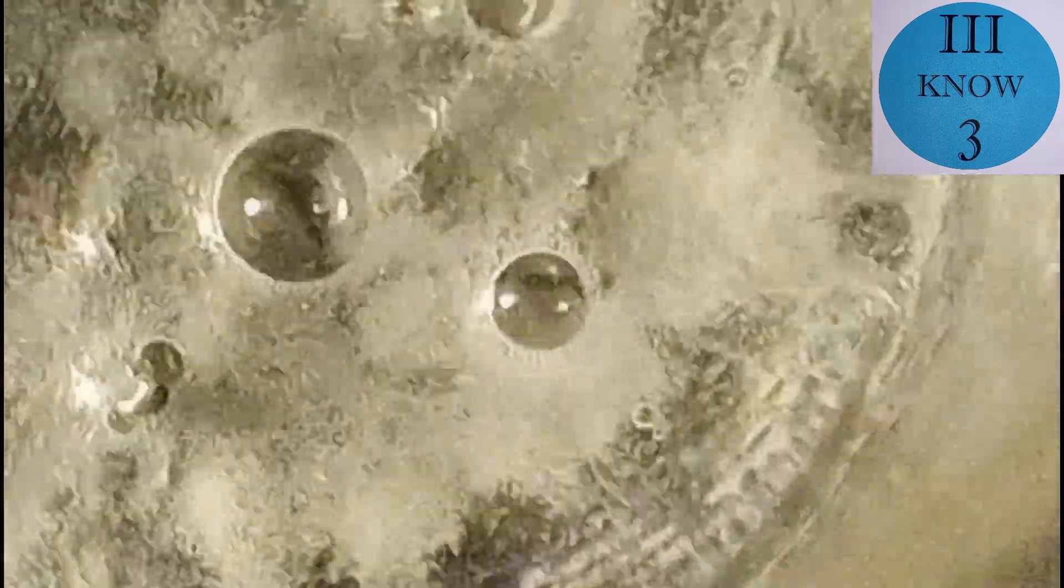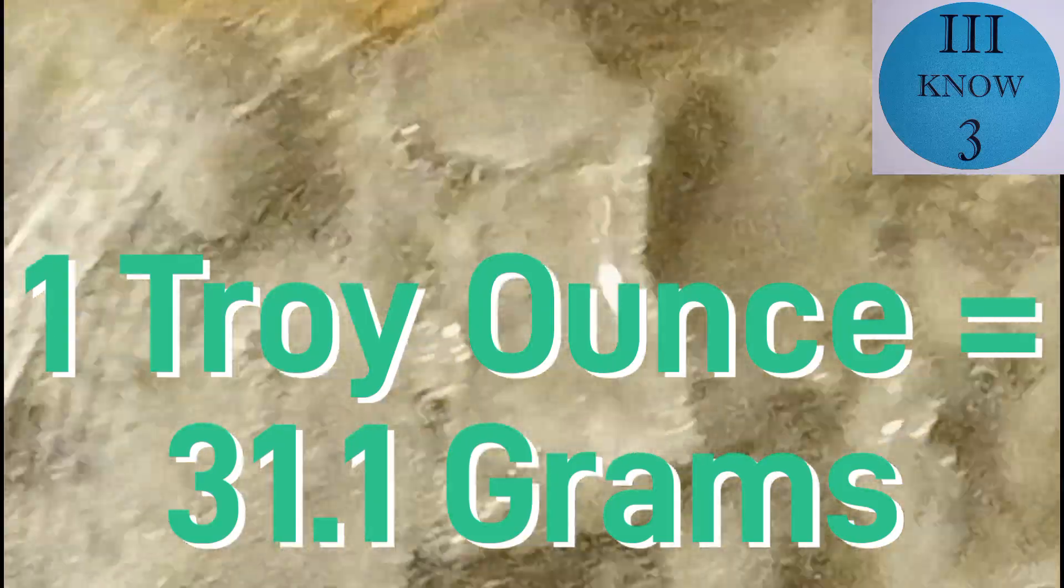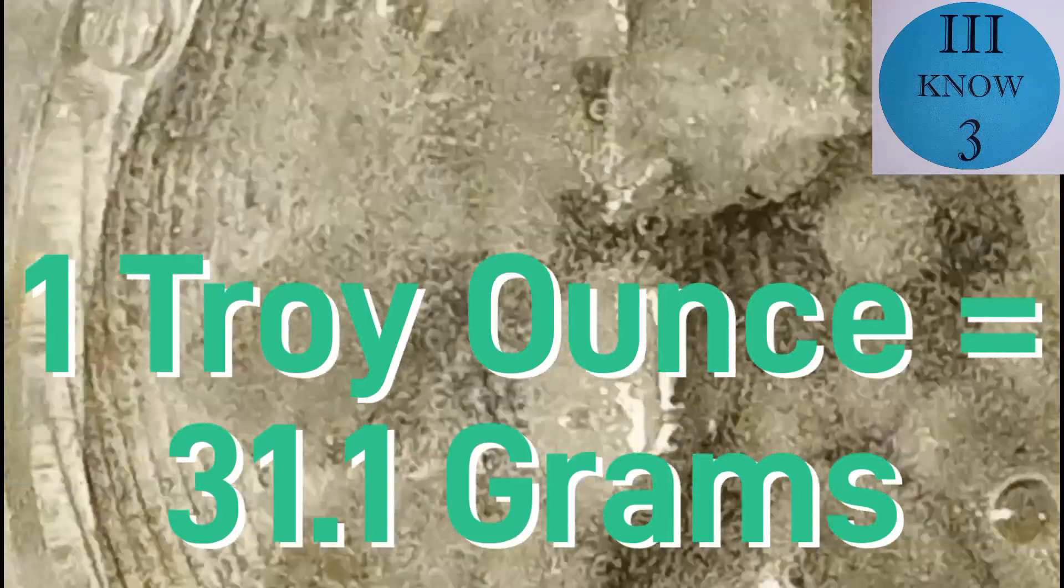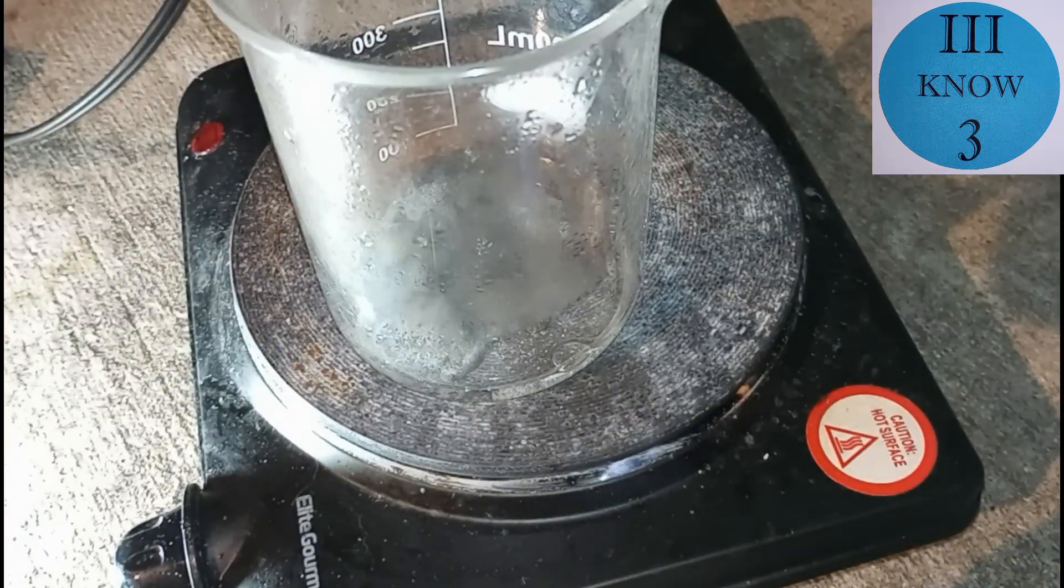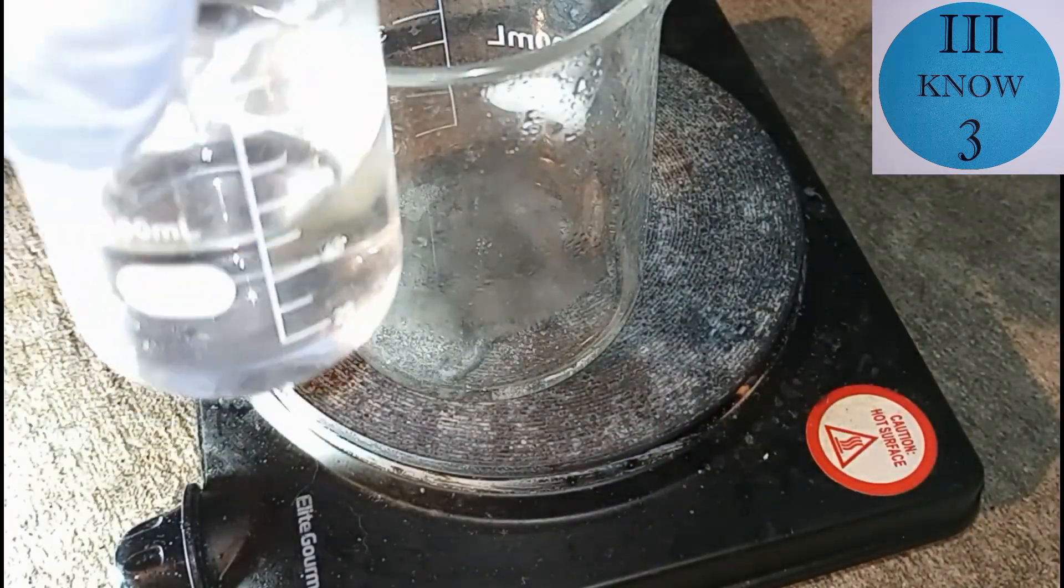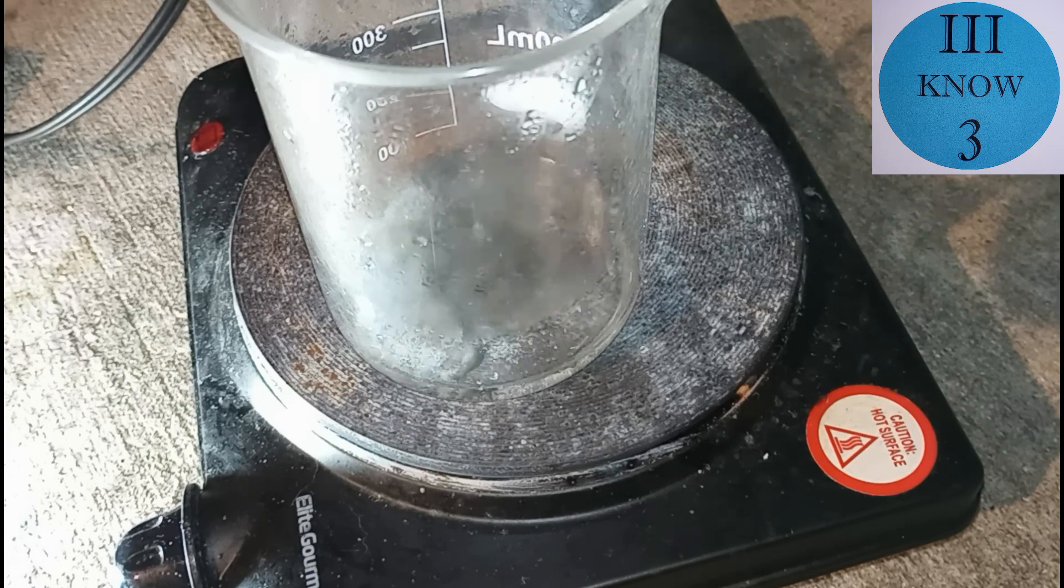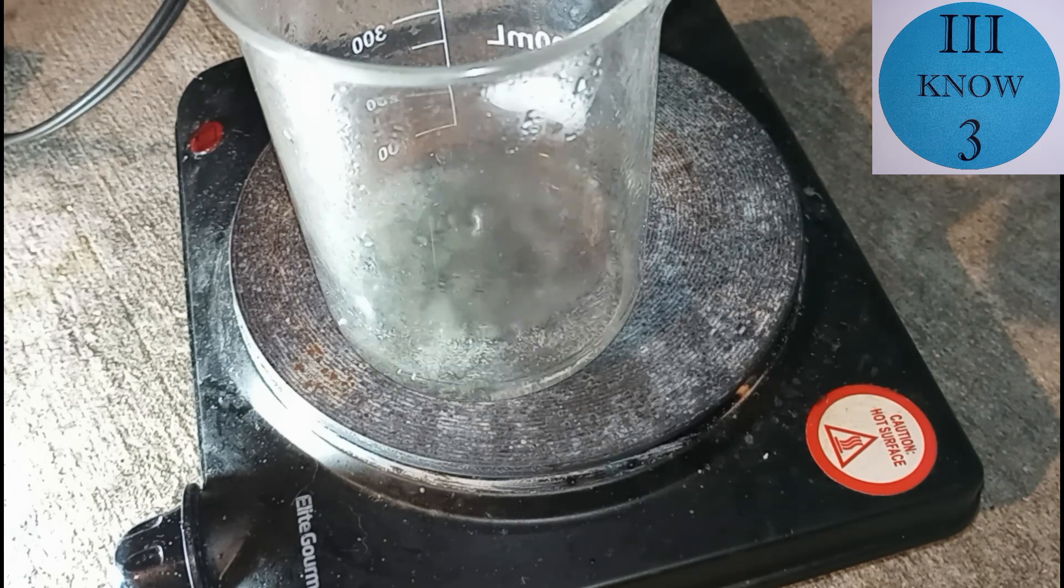I don't think I mentioned it before but this shot was weighed out to just over 1 troy ounce. And at this point I decided I would try hydrogen peroxide to see if it would speed up the process and help the tin dissolve.